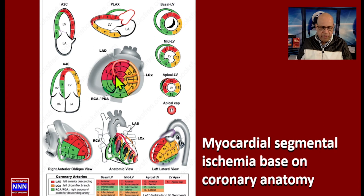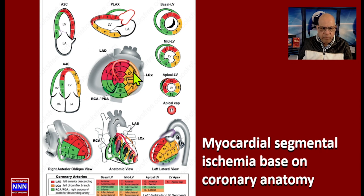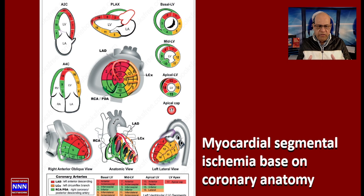The circumflex artery, represented in yellow, gives rise to the marginal branches, which supply the anterolateral and infralateral walls of the left ventricle. When we are talking about the segment called the target view or the bull's eye view, this is like compressing the heart from the apex all the way to the base into one flat segment.